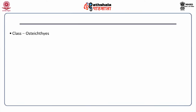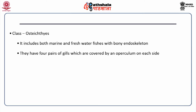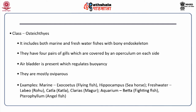Osteichthyes includes both marine and freshwater fishes with bony endoskeleton. They have four pairs of gills covered by an operculum on each side. An air bladder is present which regulates buoyancy. They are mostly oviparous. Examples include hippocampus, exocoetus, the freshwater labeo, catla, clarias and aquarium fishes such as betta and pterophyllum.